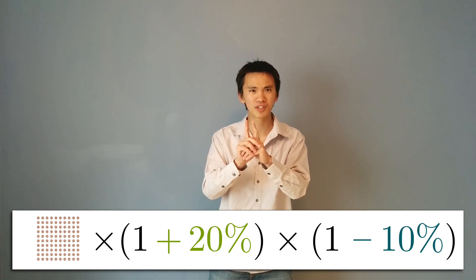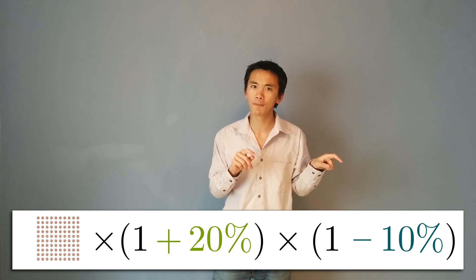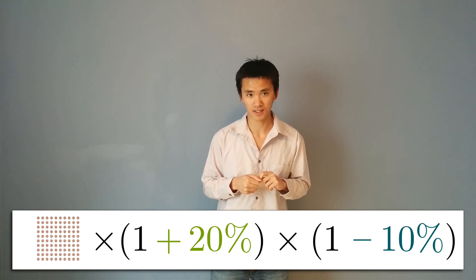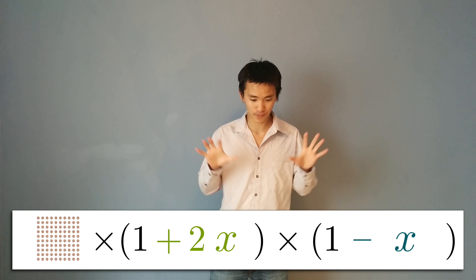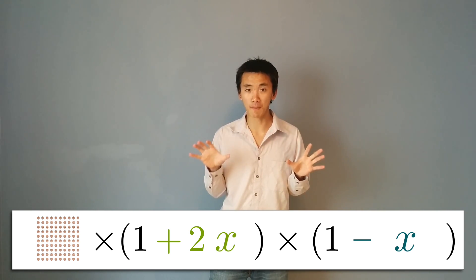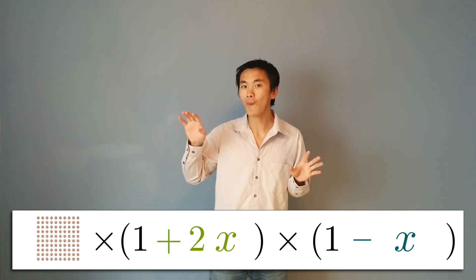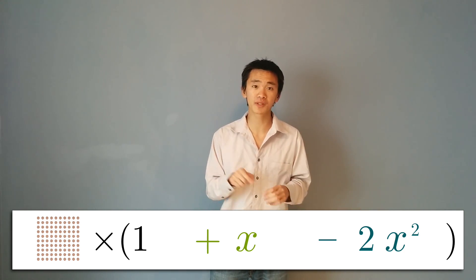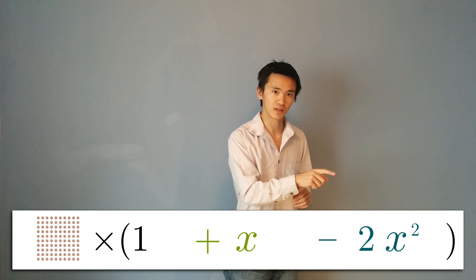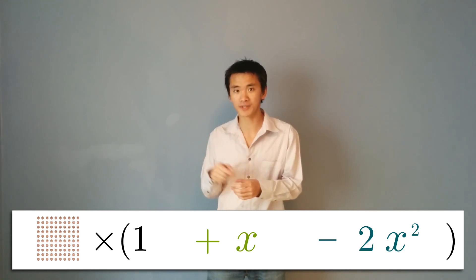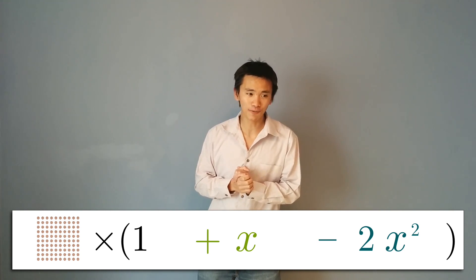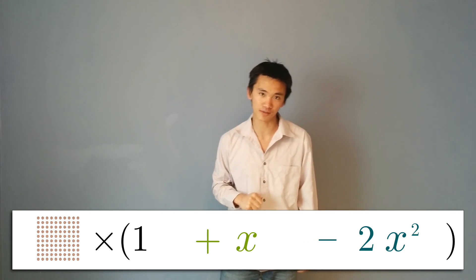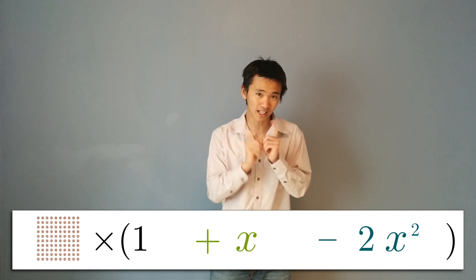Now I'll do something a little tricky: I'm going to replace this 10% by x, in which case 20% is 2 times x. Overall, my number of coins gets multiplied by (1 + 2x) times (1 − x). If I expand that, I get 1 + x − 2x². The '1 + x' part is what I'd expect if I could just add up the increase and decrease, but I'm making a mistake — and this 2x² term is exactly that mistake.